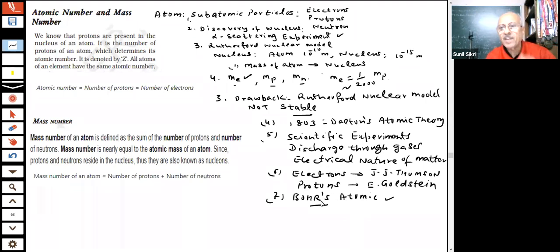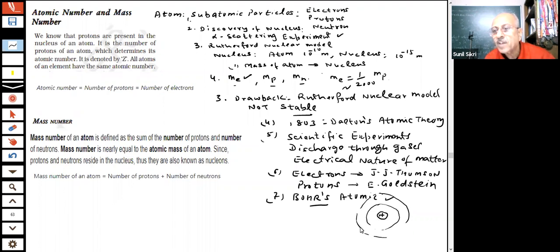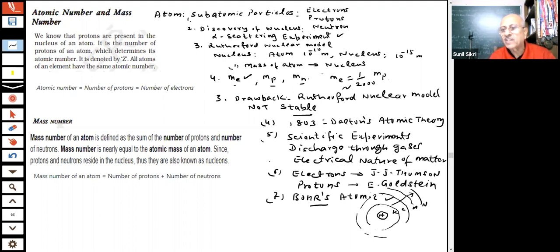The model of the atom looks like this: the nucleus contains protons and neutrons, and outside the nucleus there are electrons present in shells — K, L, M shells, which we have already discussed. As you go out from the nucleus there is the K shell, then the L shell, then the M shell. Electrons are in these shells, and they are called orbits or shells. n = 1 for the first shell.